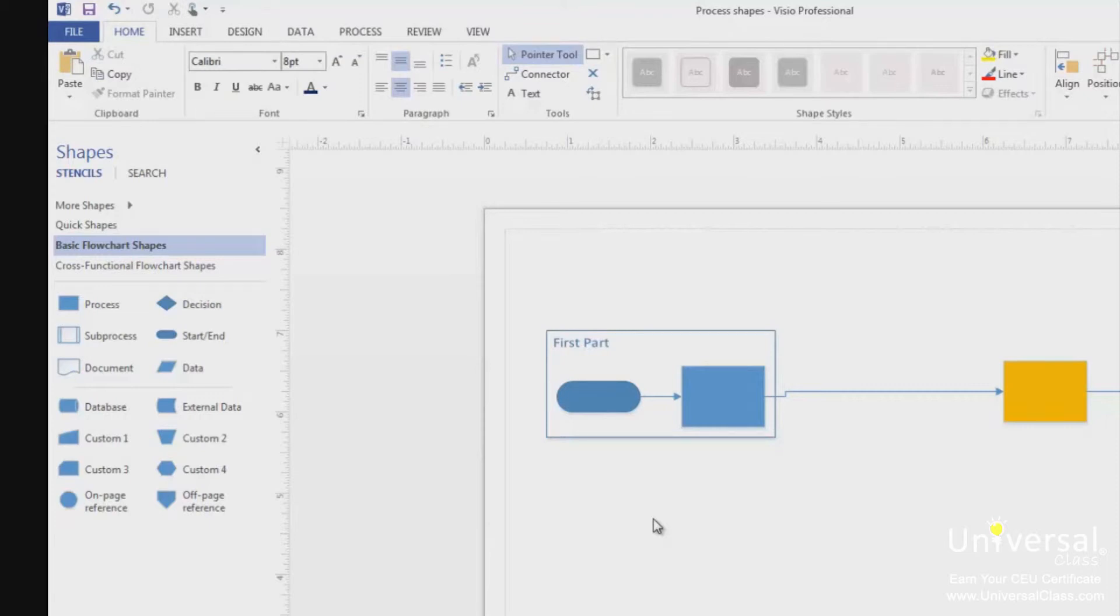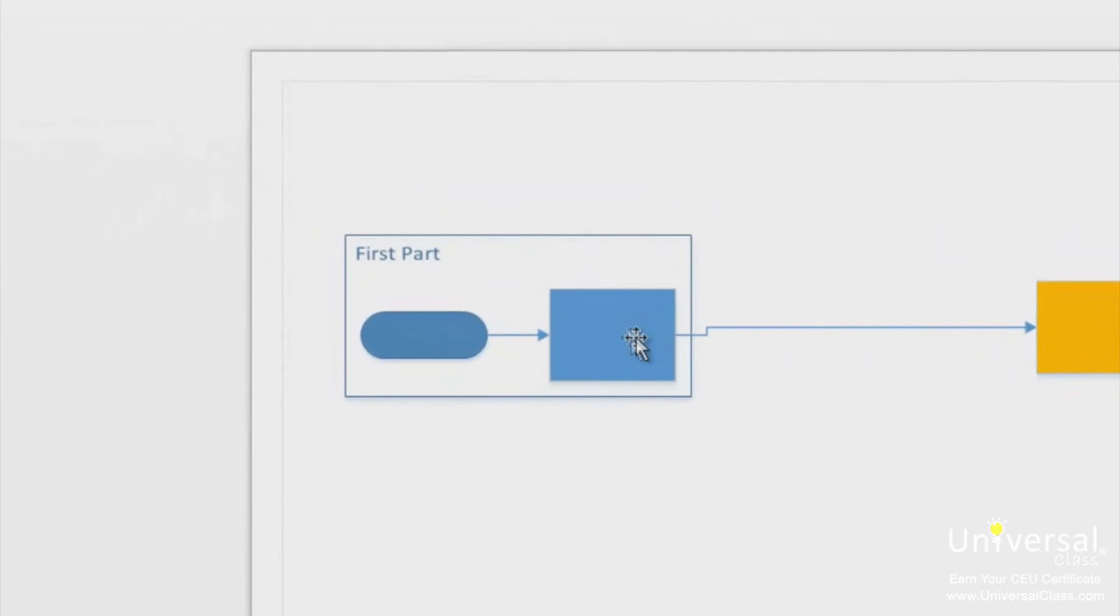You can add a shape to a container by dragging the shape and dropping it inside the container. When a shape inside a container is selected, the container glows slightly, letting you know it is the contained shape. If you don't see the container glowing when a shape in it is selected, move the shape a little.